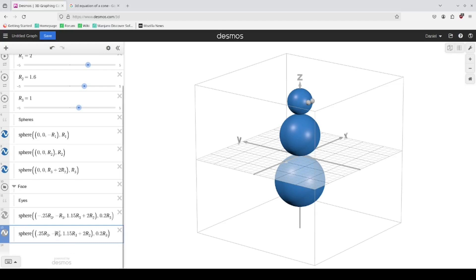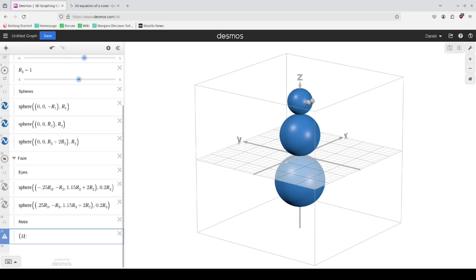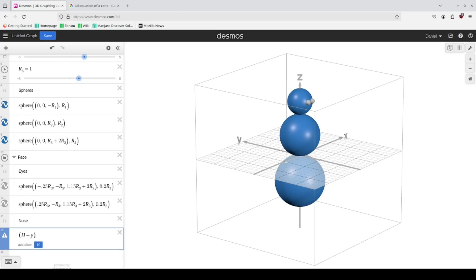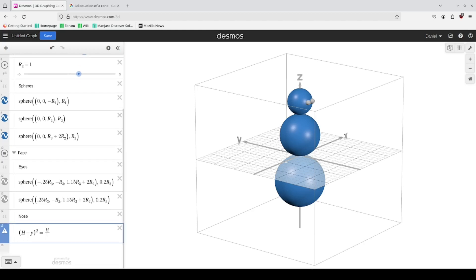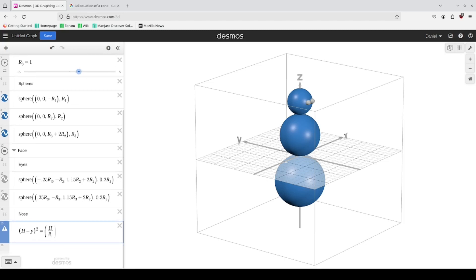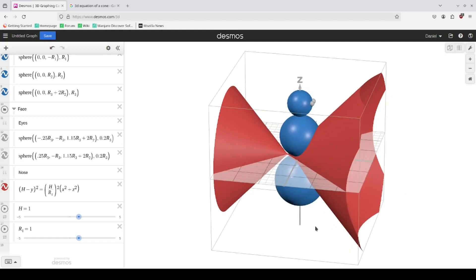All right, to do the nose we're going to use a cone. The generic equation that I want to be using is h minus y the whole thing squared equals h over radius squared times x squared plus z squared. And of course we need to add sliders for them.